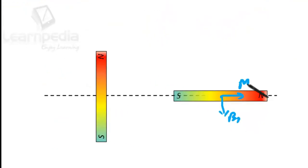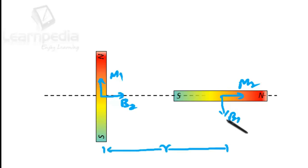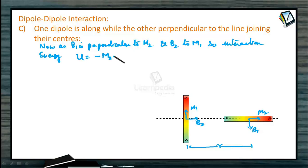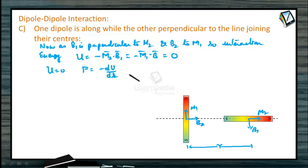Now, the interaction energy of the system: as B1 is perpendicular to M2 and B2 is perpendicular to M1, interaction energy U = minus M2 vector dot B1 vector = minus M1 vector dot B1 dot product = 0, since the cos theta function gives 0. As U = 0, the formula F = minus dU by dR cannot be used for calculating the force. In order to evaluate the force on M2 due to M1, let the length of dipole M2 be 2L, so that the field due to M1 at the S and N poles of M2 can be calculated respectively.